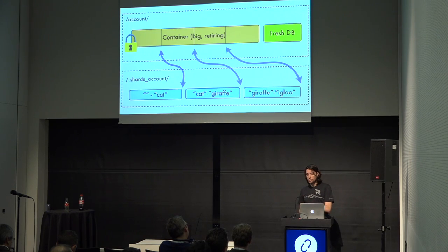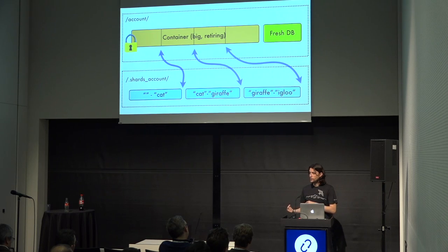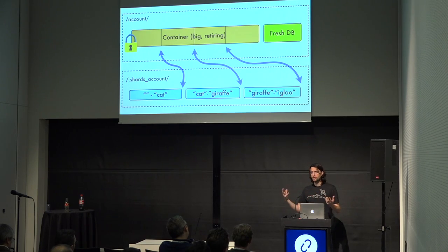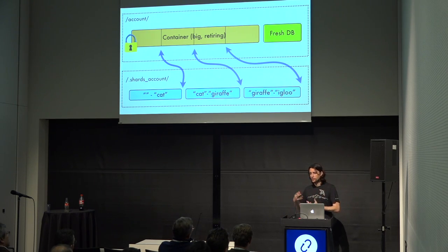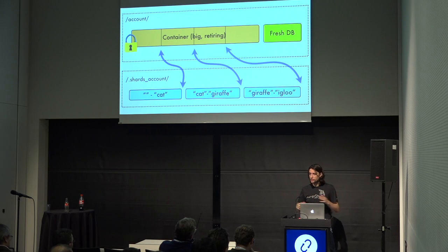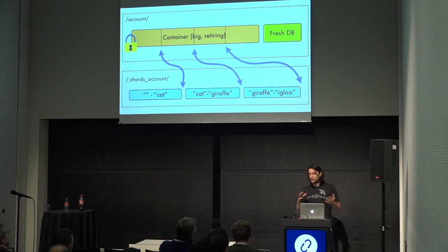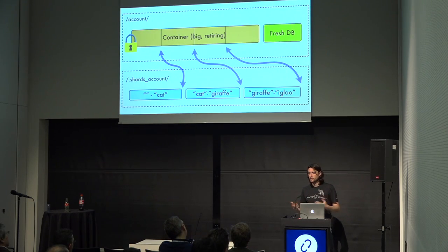The biggest single container I know of that has been sharded has approximately three billion objects in it. Fortunately, we discovered it was going to have three billion way before it did — it merely had 100 to 200 million at the time. This was in conjunction with people importing and migrating from a different storage system into Swift. We did some analysis on the remaining data, realized we'd have three billion later, and initiated sharding early — essentially pre-sharding what was already there. As it continued to grow, you can continue to shard anything that gets bigger, all done in a live production environment with no client impact or downtime at all. It's been tremendously successful.